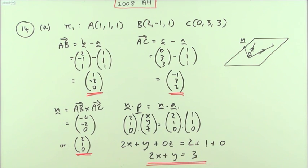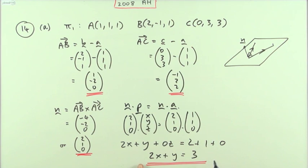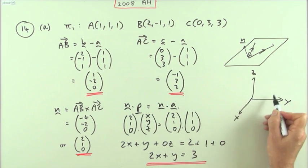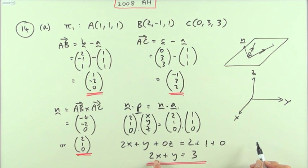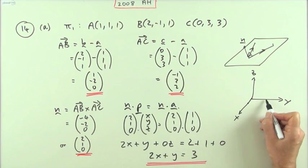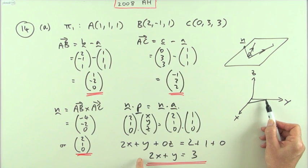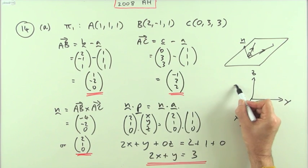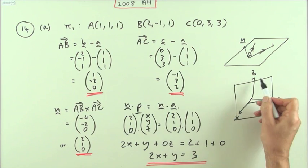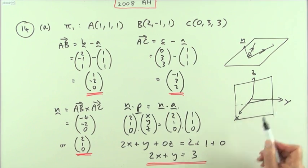There's no mention of Z in this equation, but that doesn't stop it from being a plane. It simply means this is a vertical plane parallel to the Z axis, with no intersection with the Z axis — though points on this plane can still have Z coordinates. Where it intersects: if Y is 0, X is 1.5; if X is 0, Y is 3. So it's a plane parallel to the Z axis, intersecting the floor along that line. Still, that's not needed for the question.